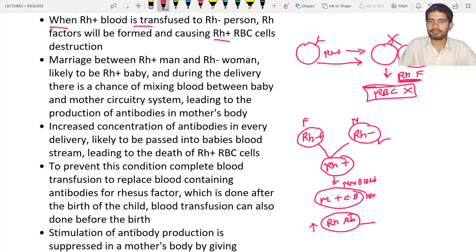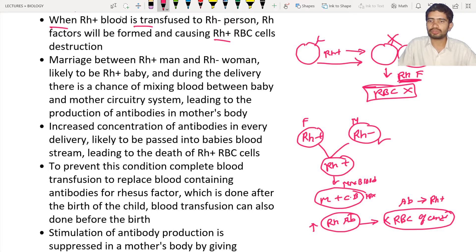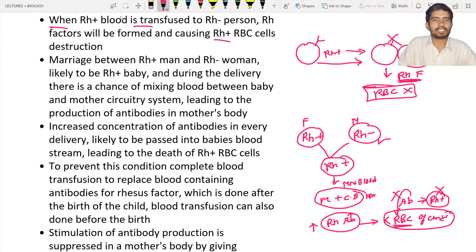In each and every delivery there is an increase of Rh antibodies inside the mother's body. At some point the increased level of Rh antibodies is going to kill the RBC of the child, and the child may die. These antibodies move from the mother's blood to the child's blood, where they destroy the child's Rh positive RBC. Increased concentration of antibodies in each delivery is likely to be passed into the baby's bloodstream, leading to death of Rh positive RBC cells.